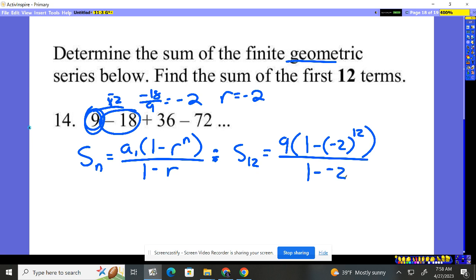Now this 1 minus negative 2, we can go ahead and change that. That's going to be 3. But up here we've got to be careful. You can't distribute that negative through, because technically you'd be multiplying by negative 1, and exponents come first. So you've got to be really careful when you enter it in the calculator.